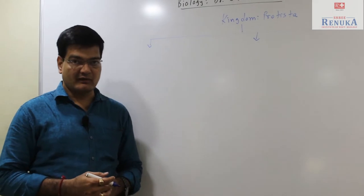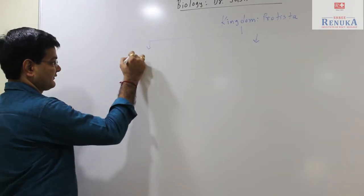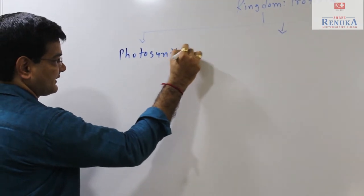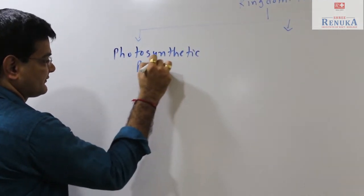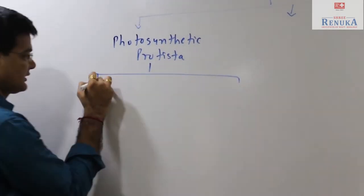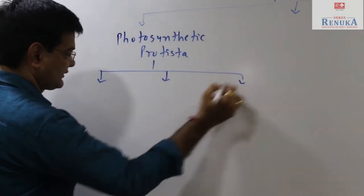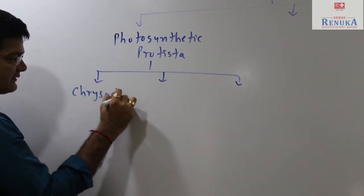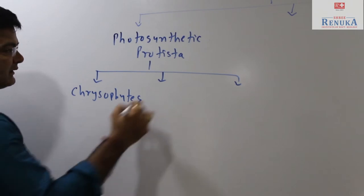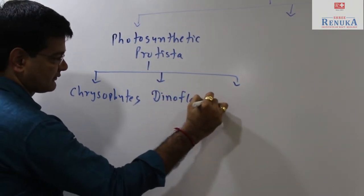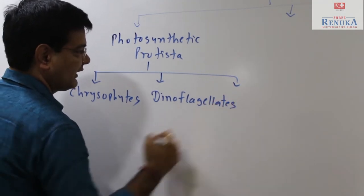Three types of protists are found on the basis of photosynthetic ability. These are photosynthetic protists, in which we talk about chrysophytes and dinoflagellates.